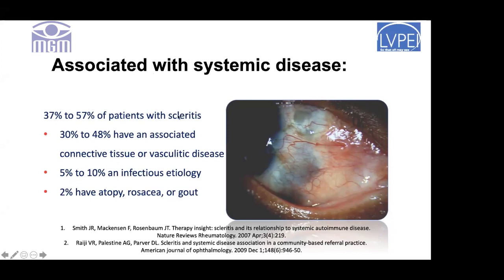What are these systemic associations? They can be connective tissue disorders or vasculitic diseases such as GPA, or SLE. A small percentage - maybe 5-10% - can have an infectious etiology. The patient can have trauma or it can be post-surgery with infection lodged in the sclera. Certain conditions such as atopy, rosacea, or gout are also known to be associated with scleritis. I am yet to see a single patient who had gout and came with scleritis, but it has been reported.